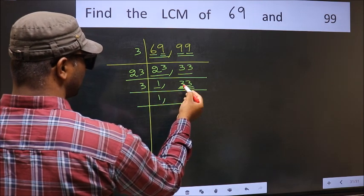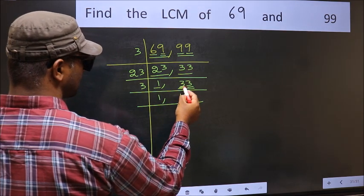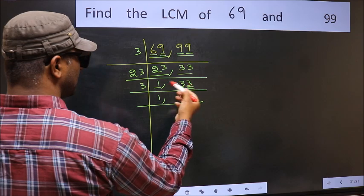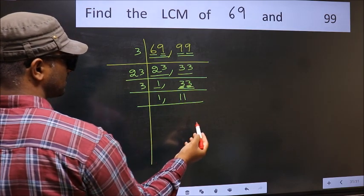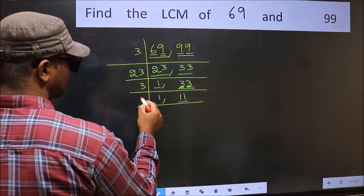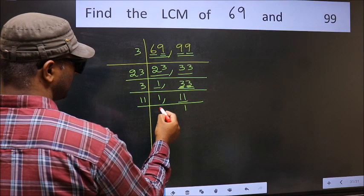First number 3, when do we get 3 in 3 table? 3 once 3. The other number 3, 3 once 3. Now here we have 11. 11 is a prime number. So 11 once 11.